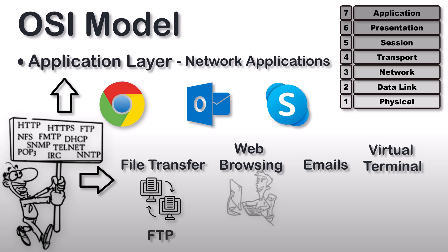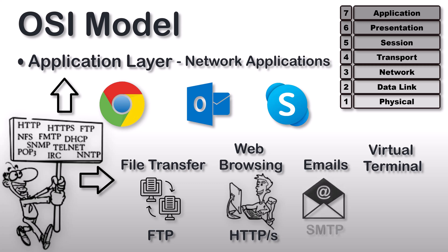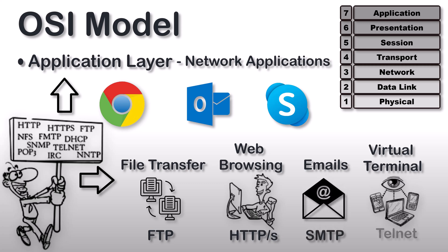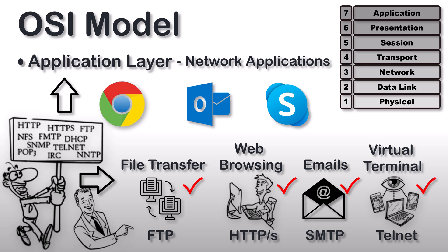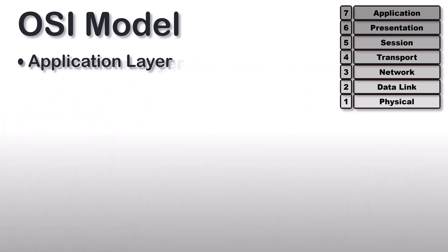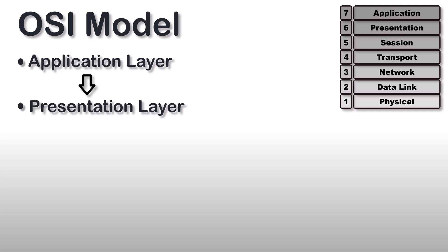File transfer is done with the help of FTP protocol. Web browsing is done with the help of HTTP or HTTPS protocol. For email, SMTP protocol is used, and for virtual terminal, Telnet protocol is used. Basically, the application layer provides services to network applications with the help of different types of protocols to perform user activities.